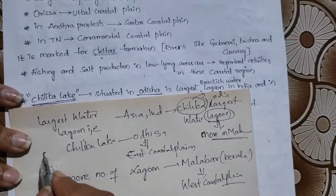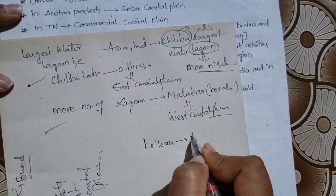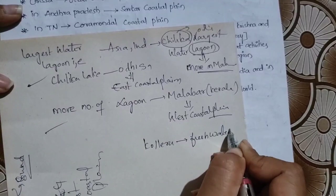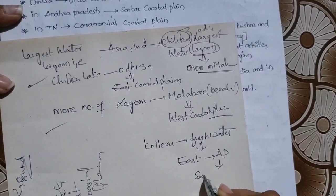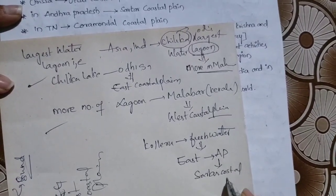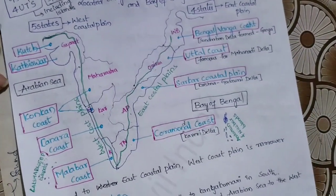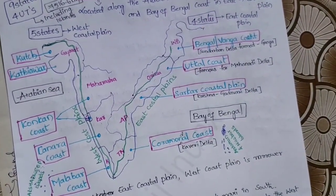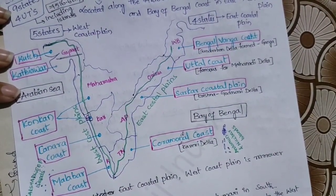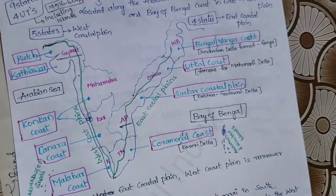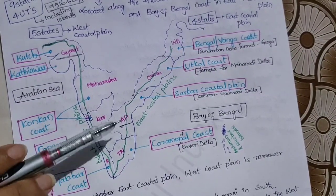Don't confuse between these two. Also, Kolleru Lake, which is a freshwater lake, is located in the east coastal plain — specifically in Andhra Pradesh, in the Sarkar Coastal Plain.